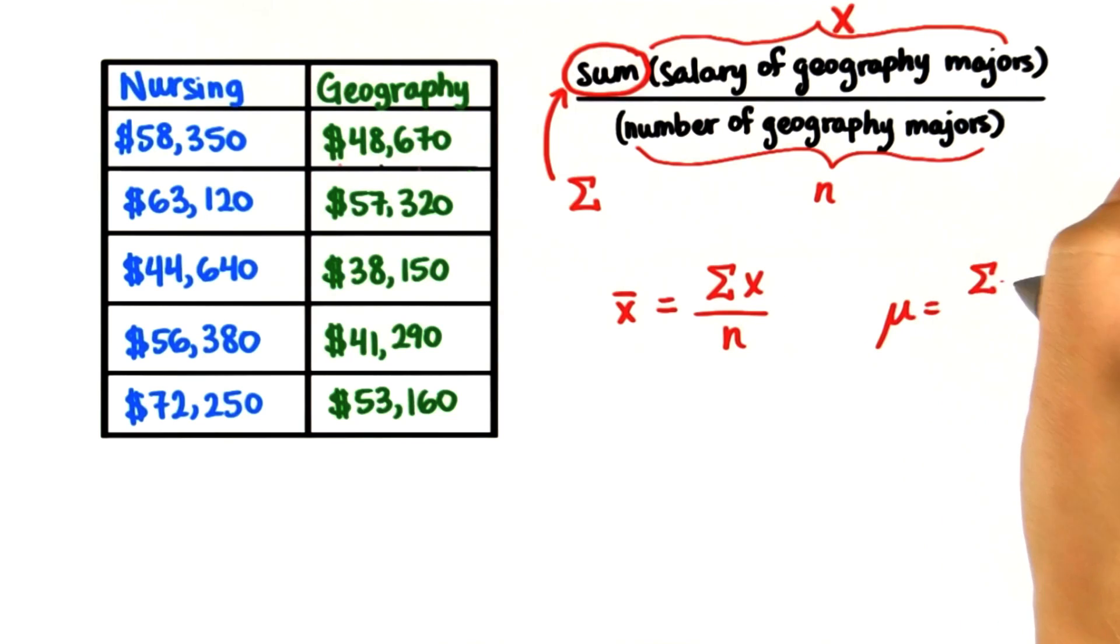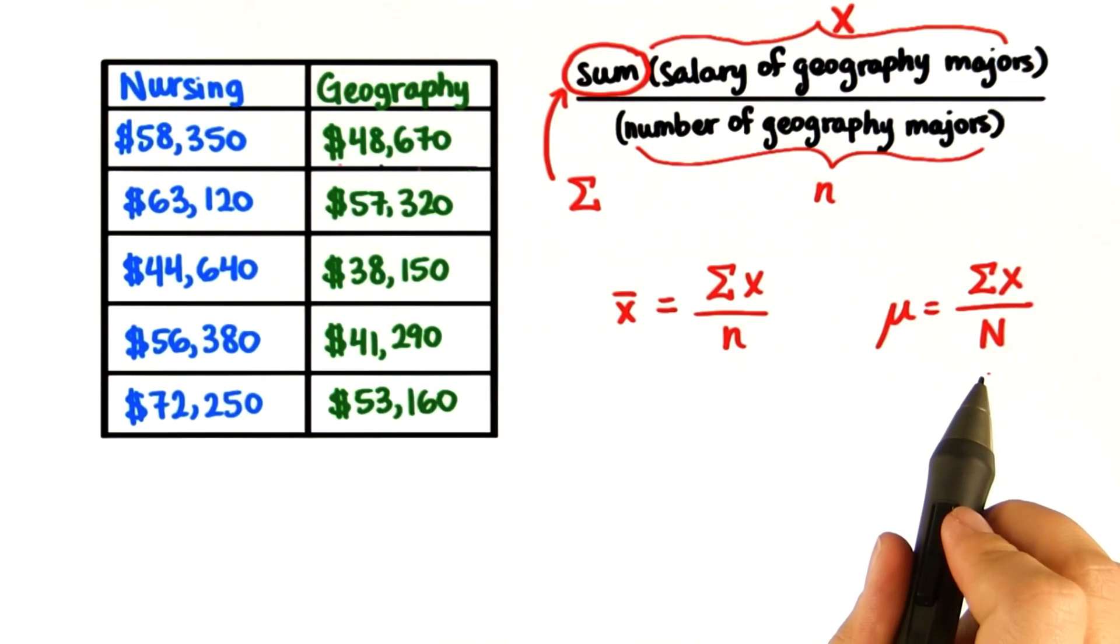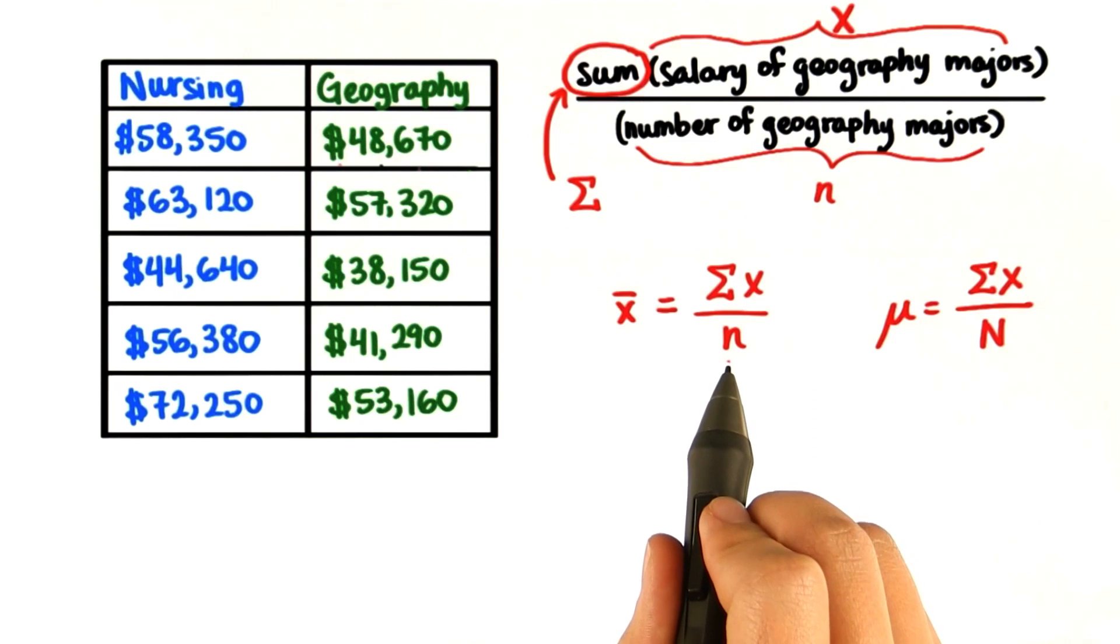And again, we can say it's the sum of x divided by big N. Because this is the number in the entire population, whereas this is the number in the sample.